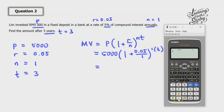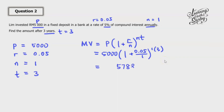Taking out the calculator: 1 plus 0.05, then to the power of 3, then multiply with 5000. We get 5788.13 RM. This is the amount that Lim will receive after three years.